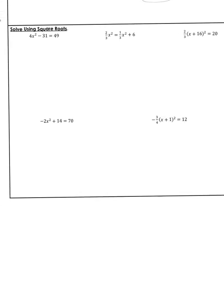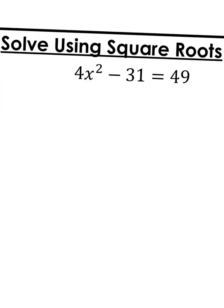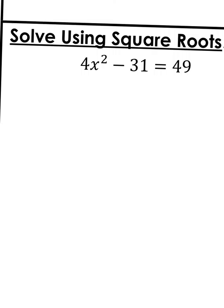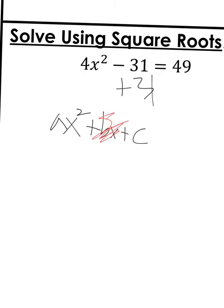This next batch of examples I'm going to solve using square roots, and I may or may not have numbers that need to be simplified. When you're solving with other methods, you need everything on one side. With the square root method, you want your x squared on one side and your numbers on the other. You can use the square root method when there is no bx term — that is, when you have ax squared plus c, with no middle term.